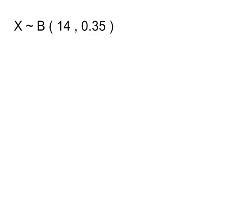We've got a binomial distribution here. That's what the B stands for — B for binomial. The number of trials N is 14, and the probability that any one of those trials leads to a success is 0.35, or 35%.